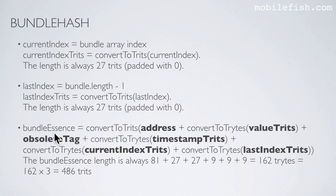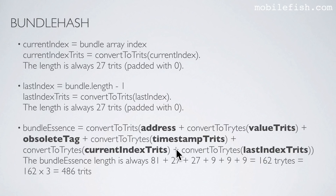Next we calculate the bundle essence. This is the address in trits, the value converted to trits, the obsolete tag in trits, the timestamp converted to trits, the current index converted to trits, and the last index converted to trits. We add all these values together and that is the bundle essence. The bundle essence length is always 162 trits, which is the same as 486 trits.